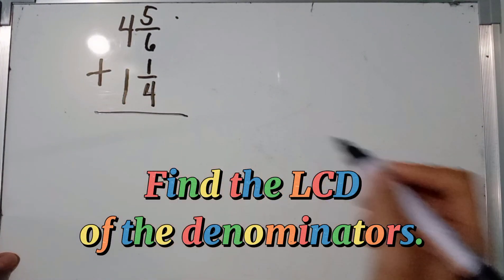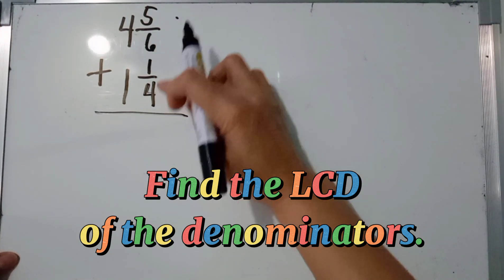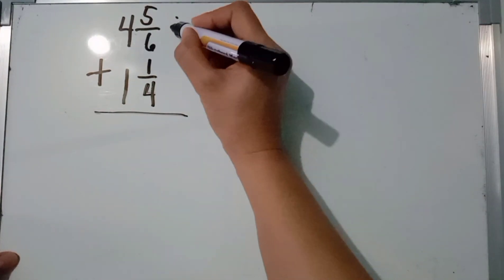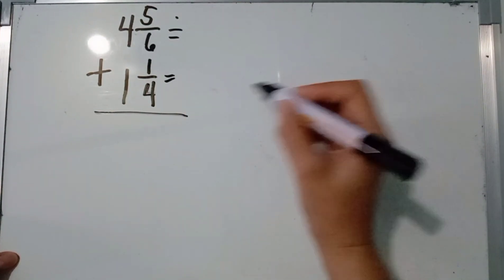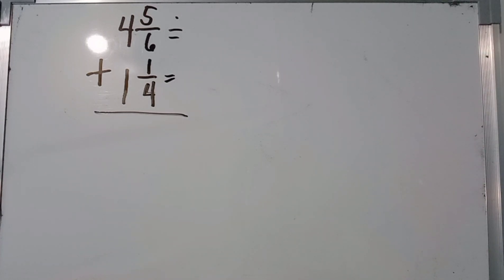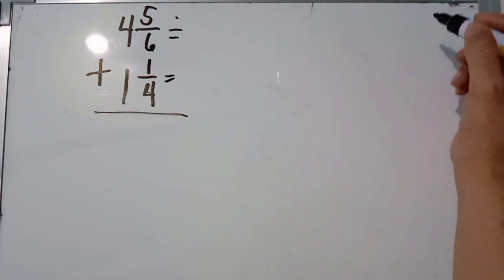Next, we are going to find the LCD of the denominators — the LCD of 6 and 4. We can use continuous division or ladder method, or we can use the listing method. Both will give the same result. Let's use the listing method.